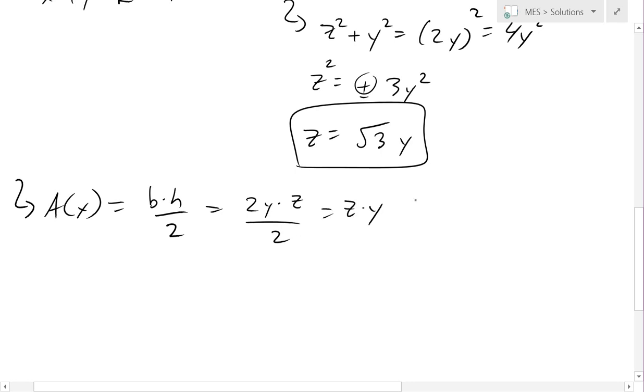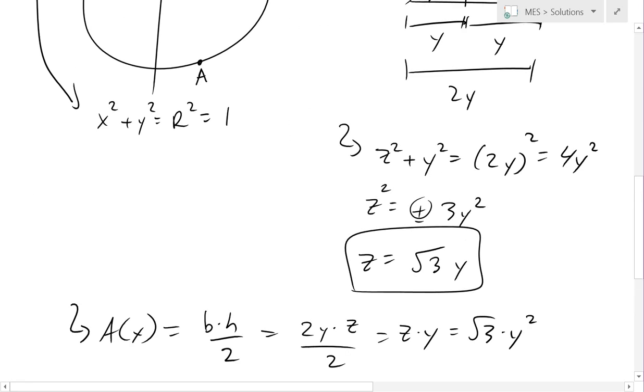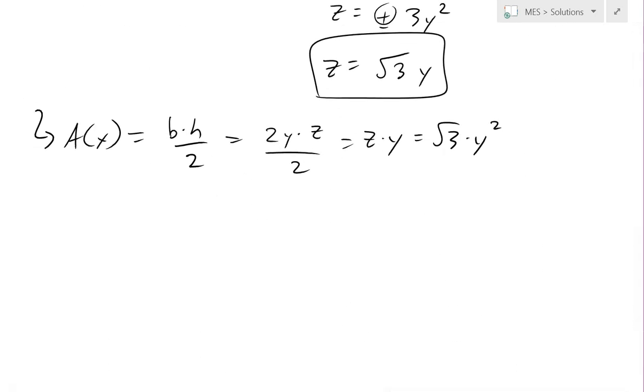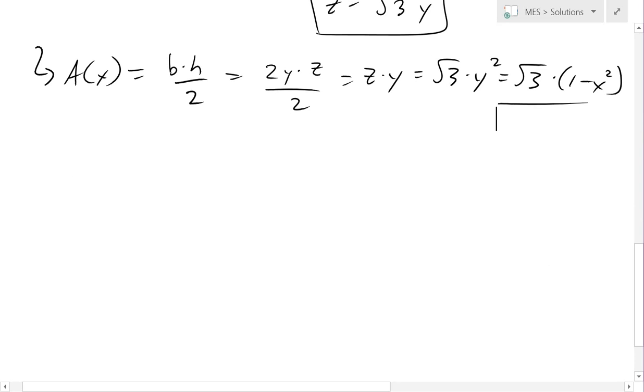This equals z times y. And now z equals square root 3 times y. There's a y there, so we put a y squared. And now we know that y is equal to square root 1 minus x squared. But when you square it, it just becomes 1 minus x squared. So this equals square root 3 times 1 minus x squared. So that is our area function, and it changes wherever x is.